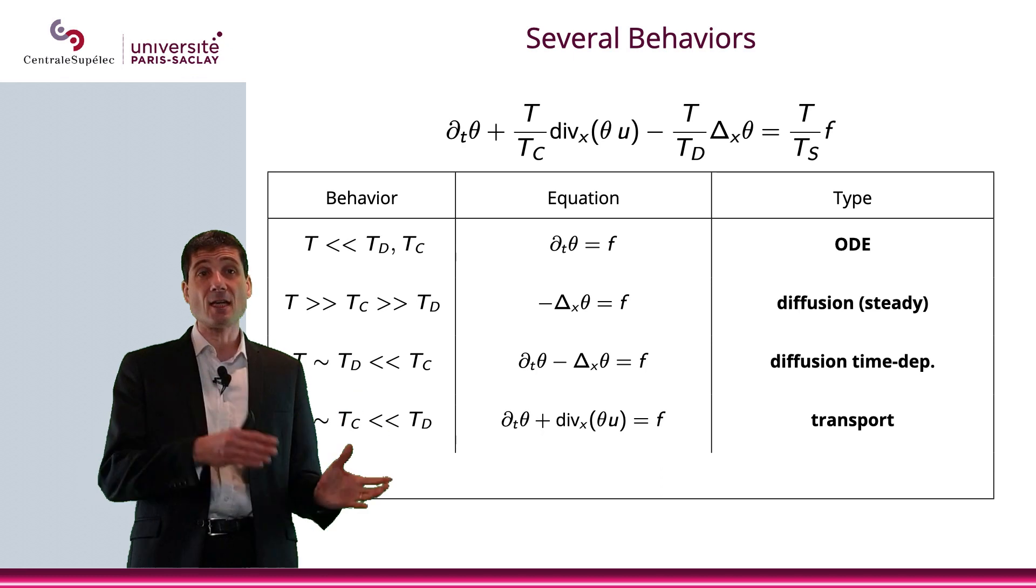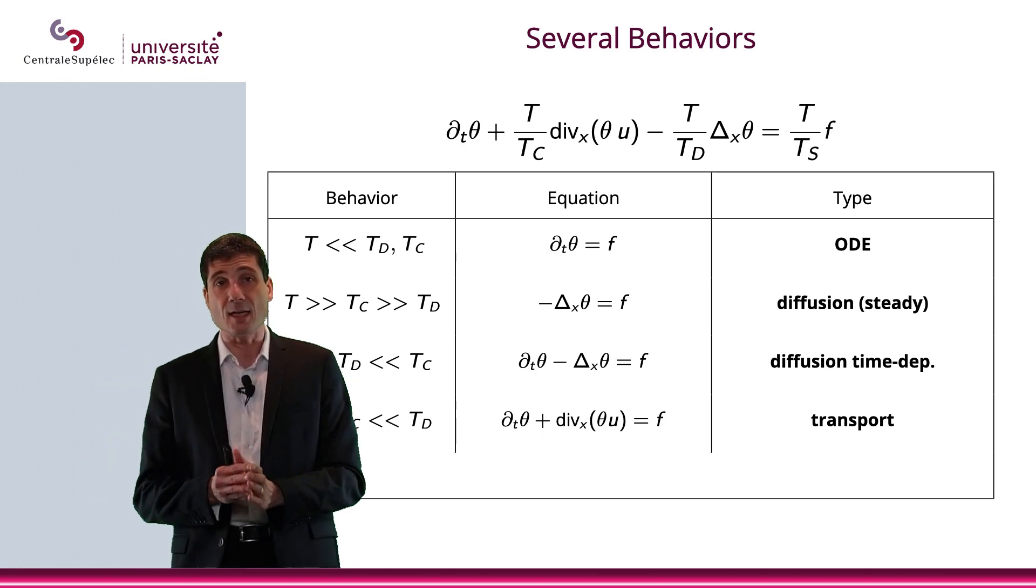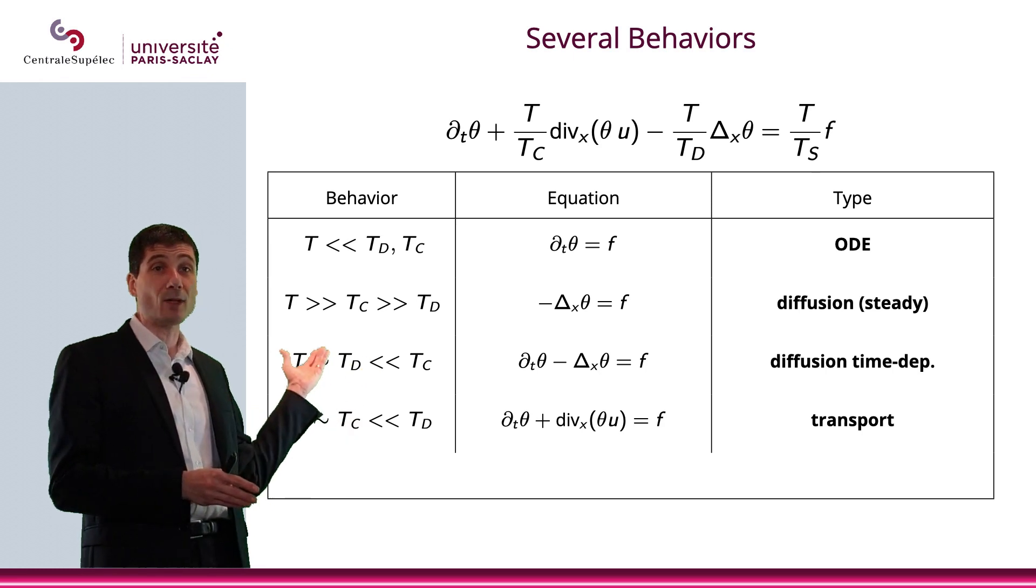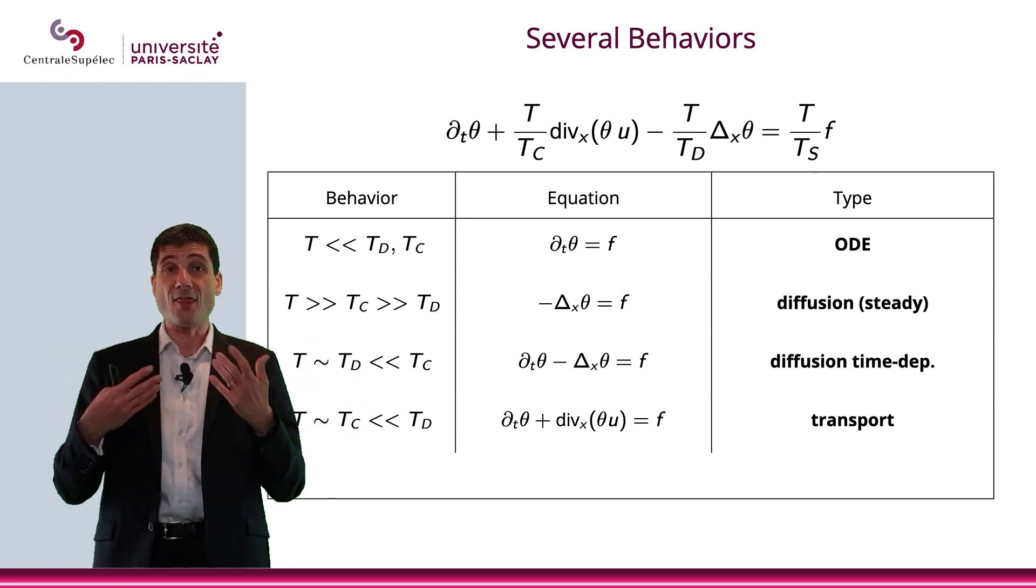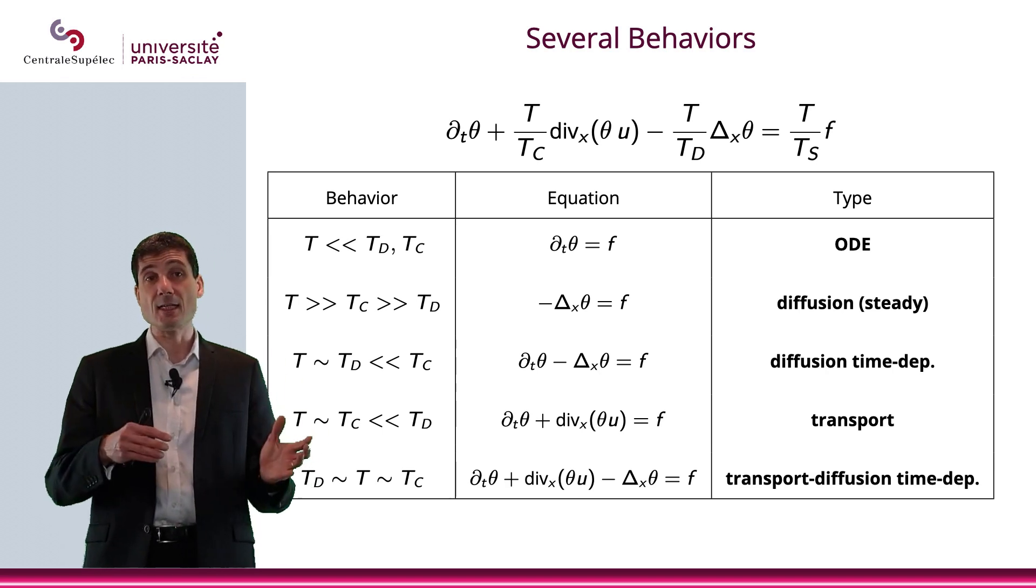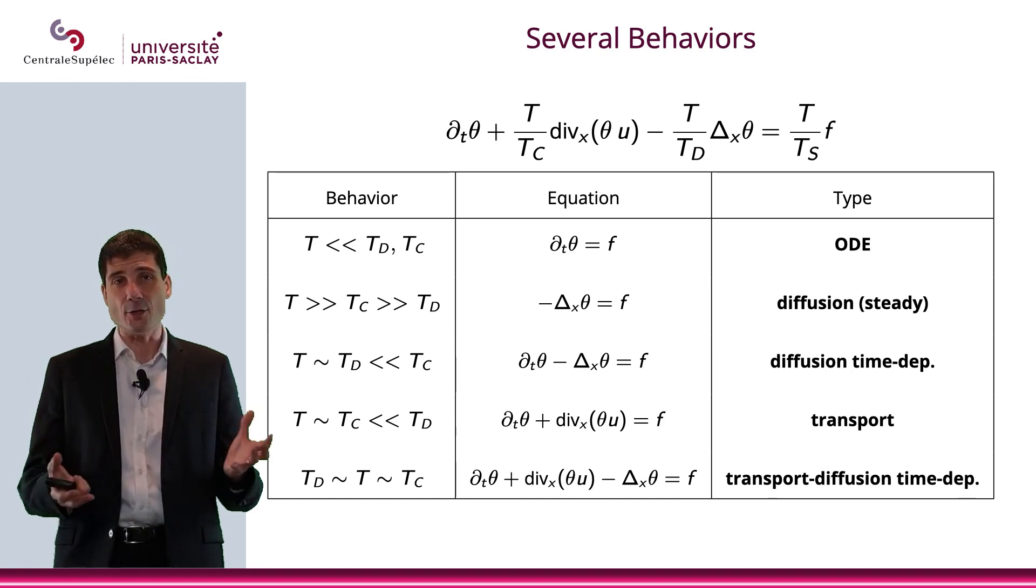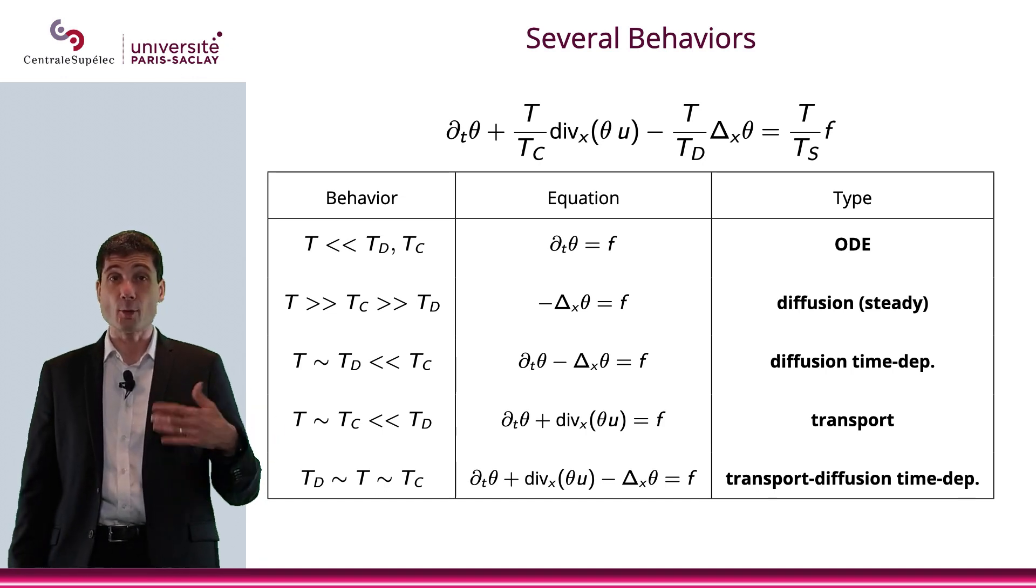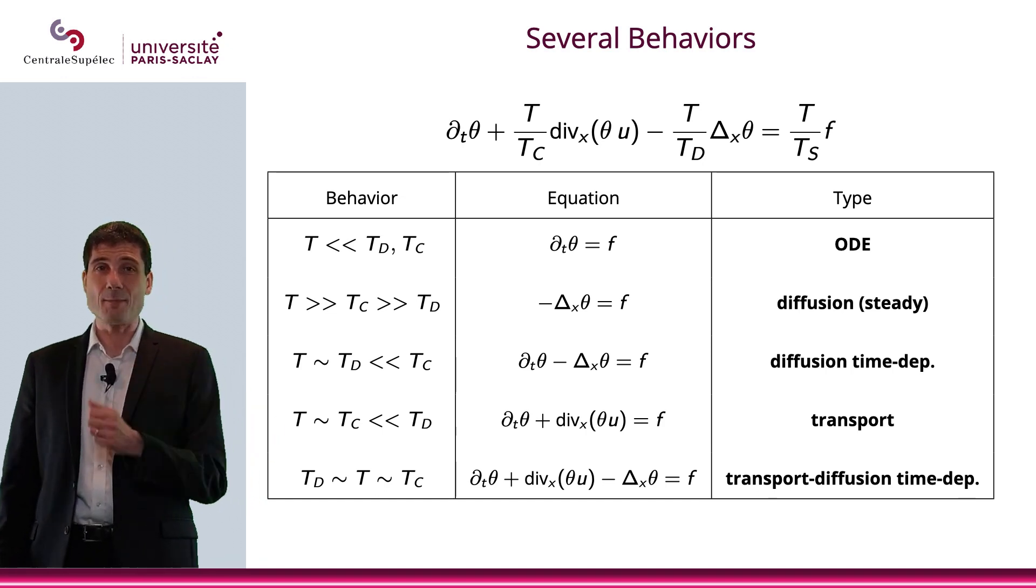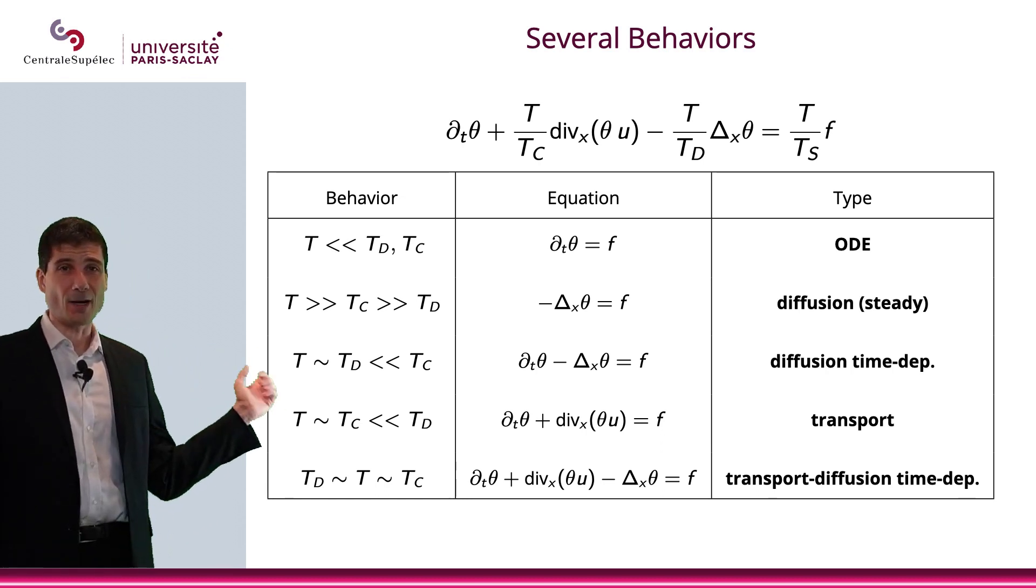What happens if we have T, which is close to Tc, and very small with respect to Td? That will leave us with the first two terms, and that would be a transport equation. And finally, Td, T, and Tc that are about the same value. And then in this case we'd have a transport diffusion time dependent equation. Basically, the full equation, which is right here.